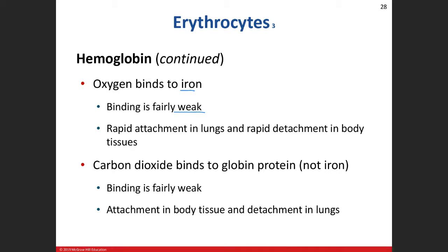The blood doesn't stop flowing when it's in the capillary. It's like trying to jump onto a moving train — that's what oxygen and carbon dioxide are doing. We want a weak binding because it makes it easier for oxygen to jump on in the lungs, and when it gets to the tissue, the body doesn't have to exert a lot of energy to pull the oxygen off. That rapid attaching and detaching is due to the weak binding.